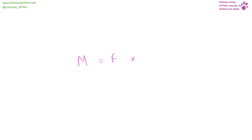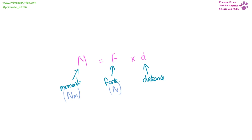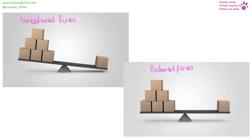The moment equals force times distance. The moment is measured in Newton metres, force in Newtons, and distance in metres. If our forces are unbalanced — for example if one force is bigger than the other — we're going to have a turning effect, whether clockwise or anticlockwise. If the forces are equal and balanced, there will be no turning effect.